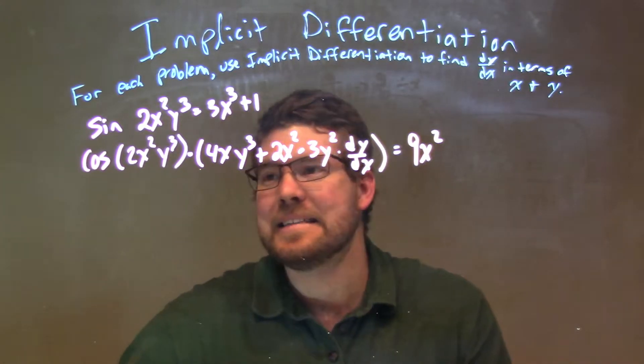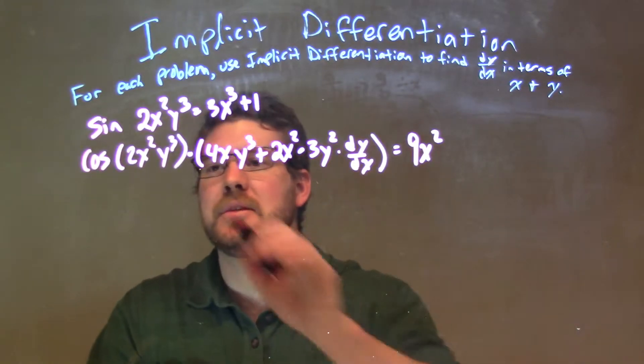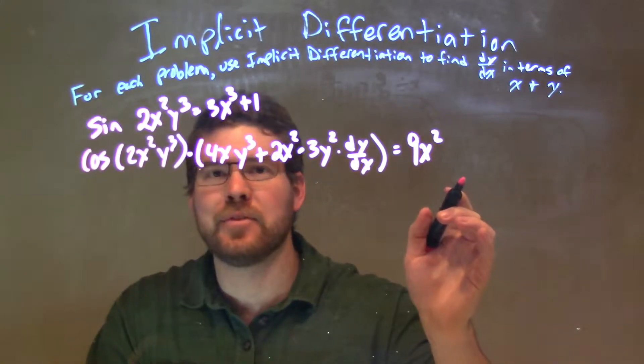Now my whole goal is to get dy/dx by itself. To do that, I'm going to divide by cosine on both sides.